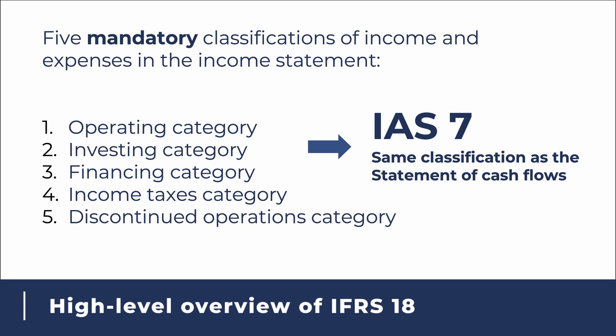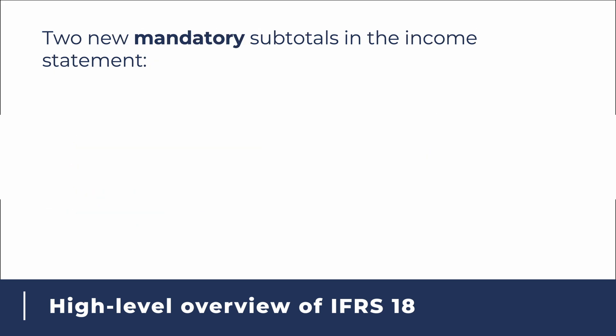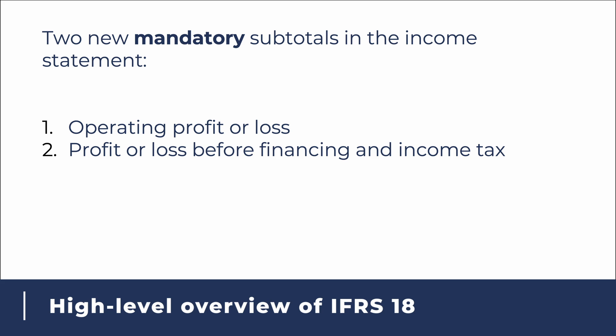According to IFRS 18, all income and expenses of the company should be classified into these five categories. The new standard also mentions that two new mandatory subtotals should be presented in the Statement of Profit or Loss: the first is Operating Profit or Loss, and the second is Profit or Loss before Financing and Income Tax. Some companies may already be using these, but now that they are mandatory, all companies must present these two subtotals. This aims to reduce diversity in practice, so that users of financial statements can benefit from comparability across different entities.